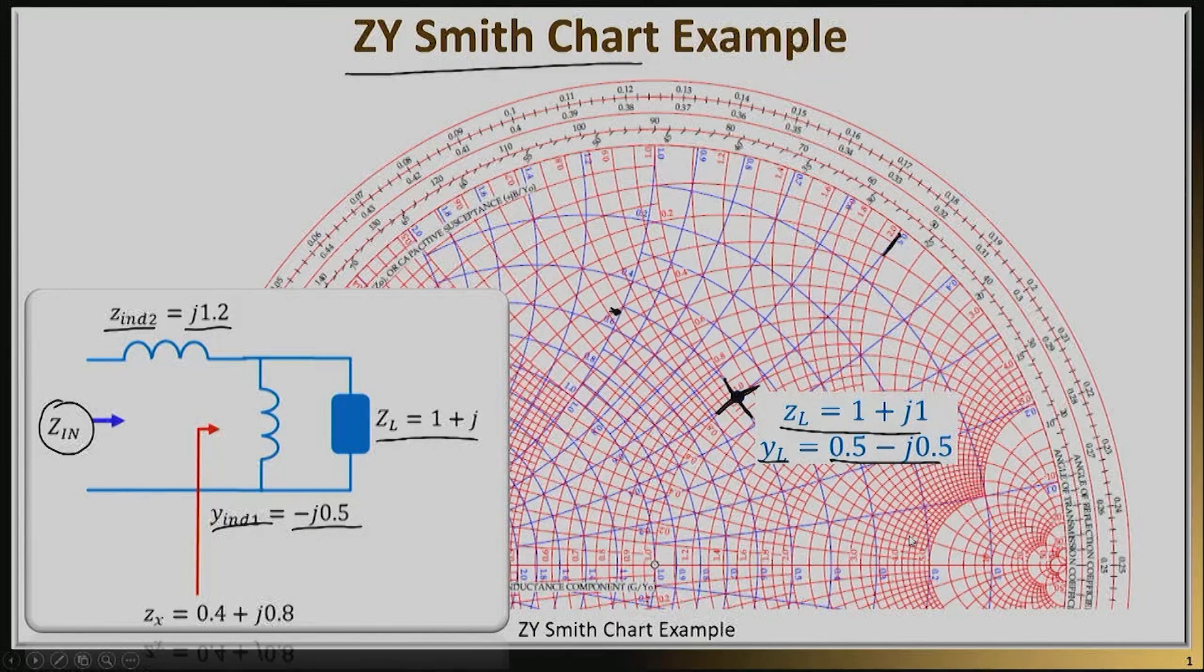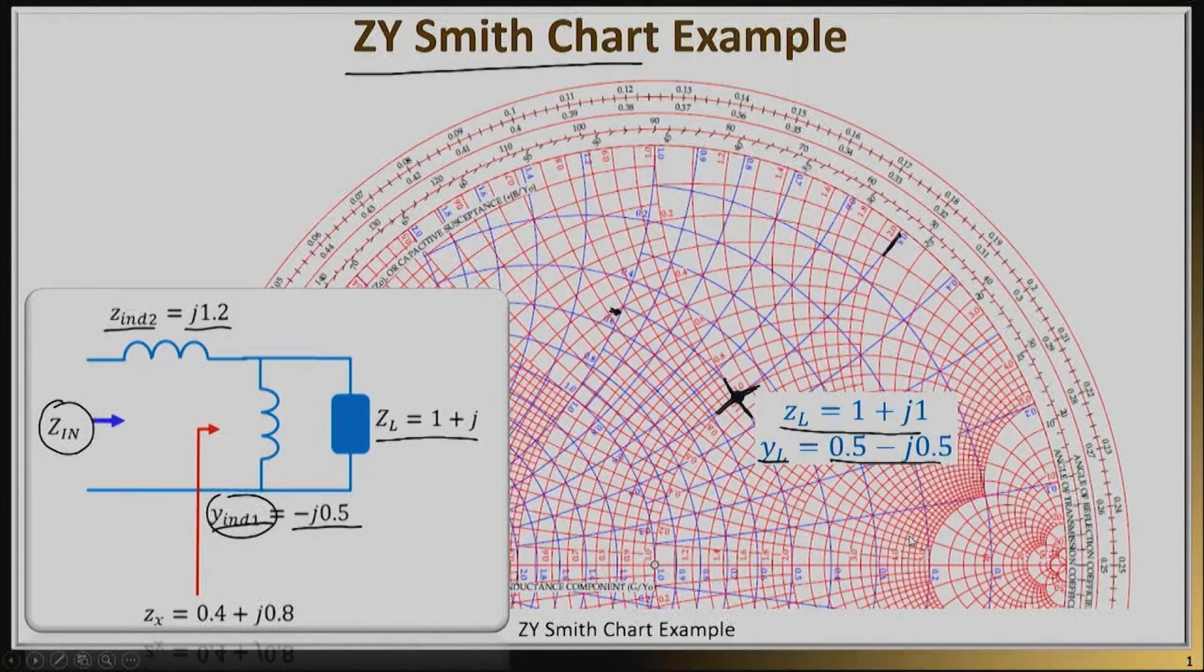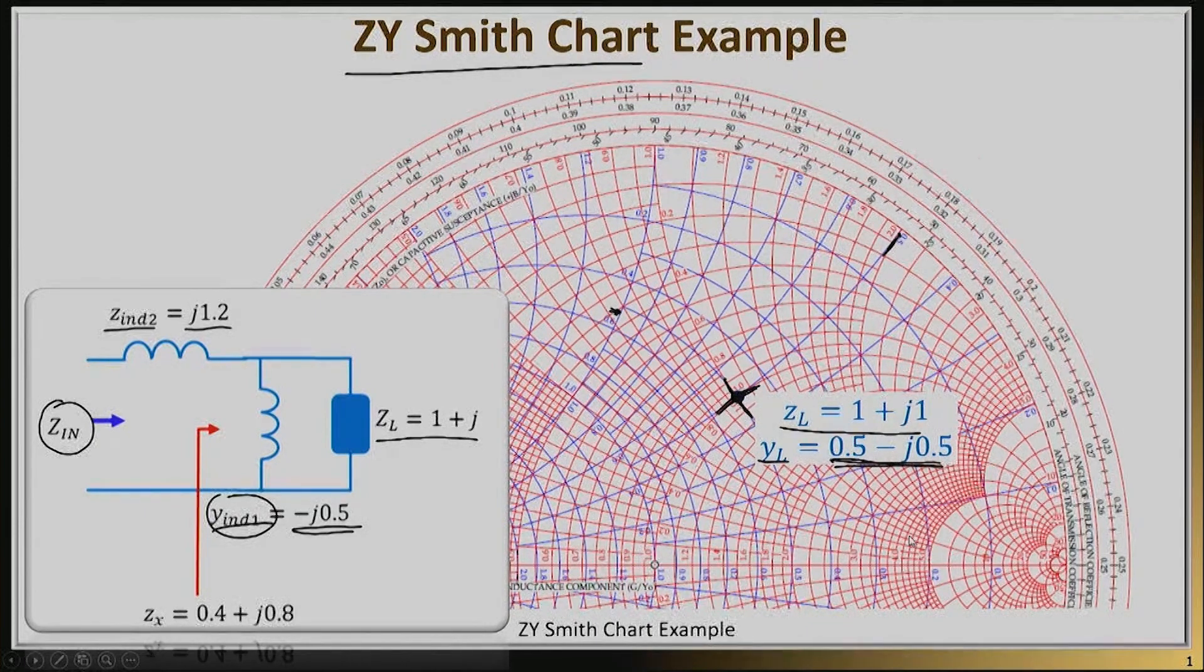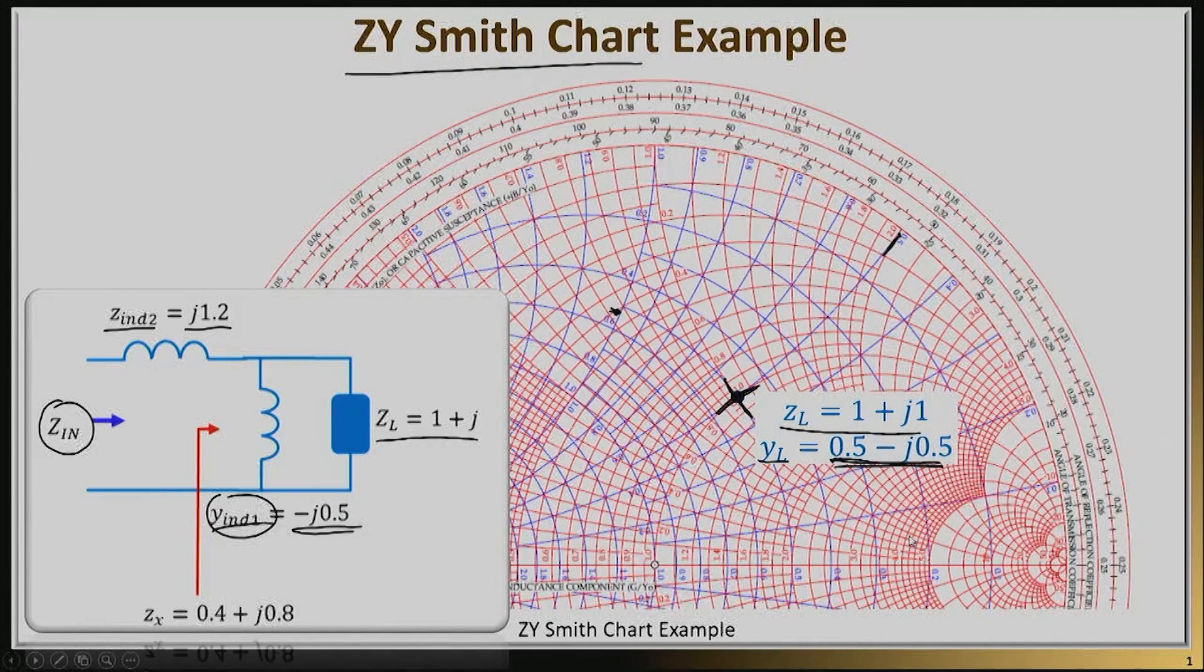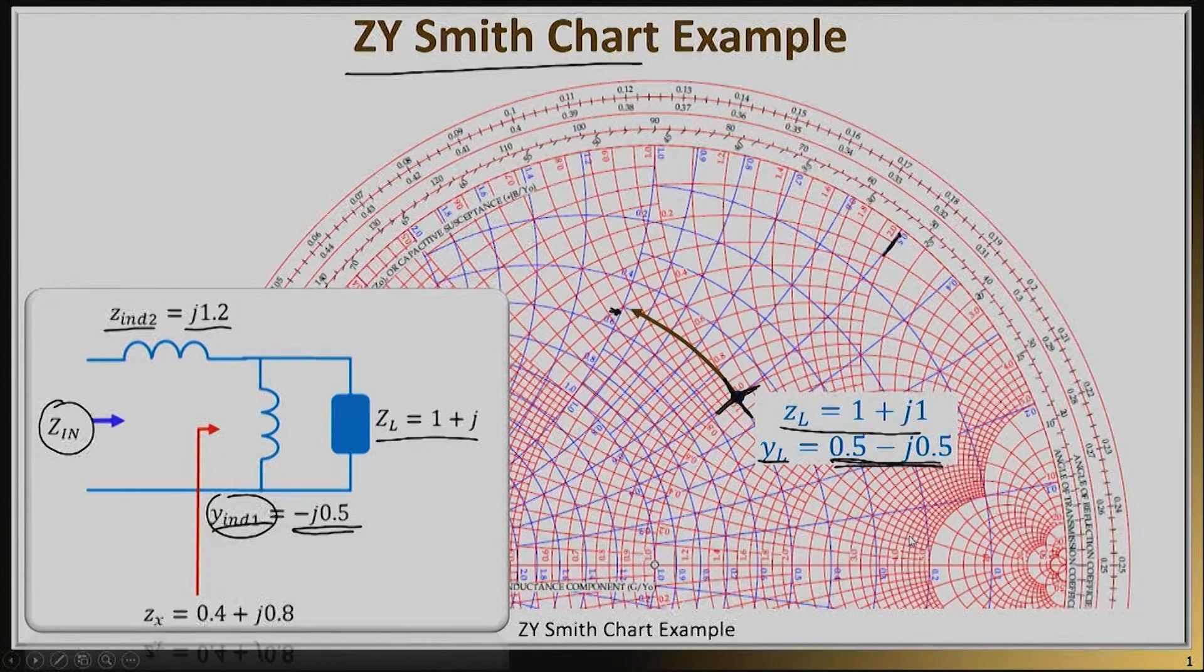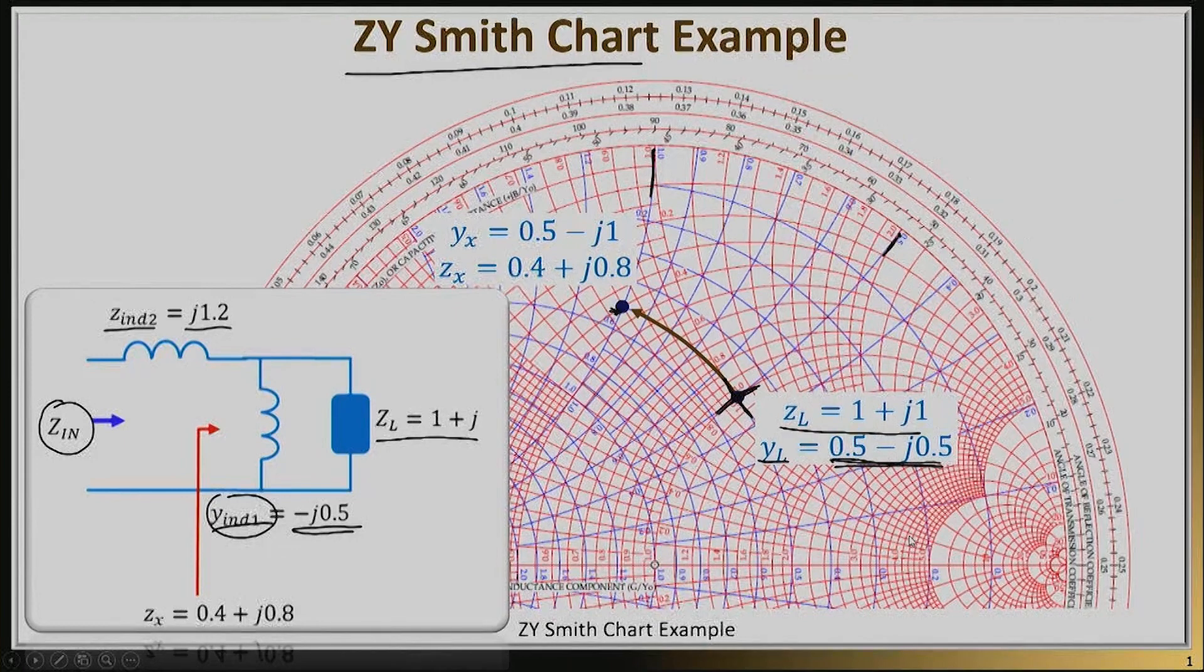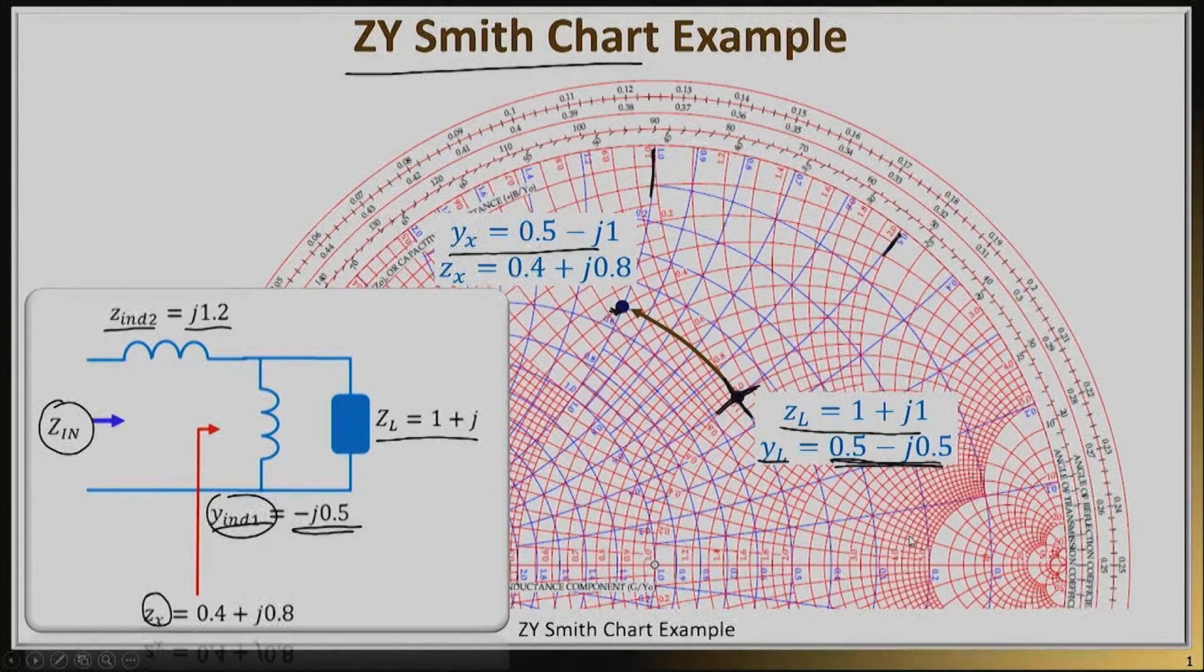Now I'm adding this inductance, Y inductance 1. It's easier to work with admittances because the two loads are in parallel. I start with 0.5 minus j0.5 and add another negative j0.5. The real part remains the same, but the imaginary part becomes negative 1. I move along this circle—the real part remains the same, but the imaginary part grows to negative j1. Here's the circle of negative j1, so my point is right here. Yx, the admittance, equals 0.5 minus j1.